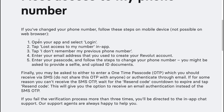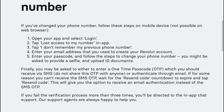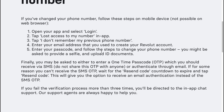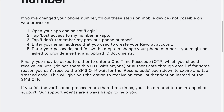Firstly, open your app and select login. Then click on 'Lost access to my number' in the app. Tap 'I don't remember my previous phone number.' After that, enter your email address that you used to create your Revolut account, enter your passcode, and follow the steps to change your phone number.